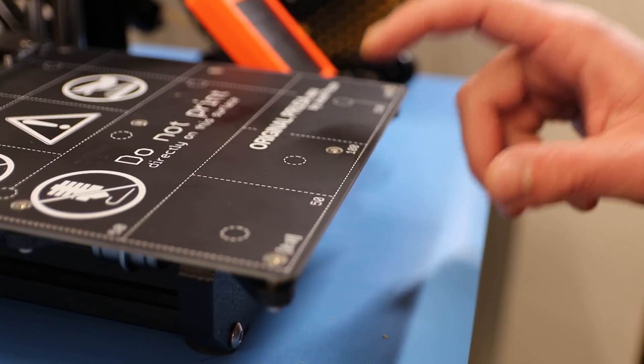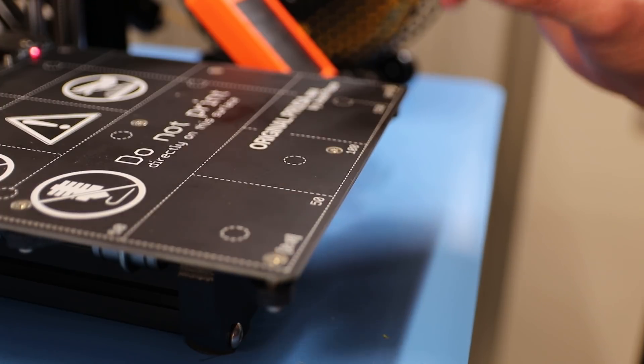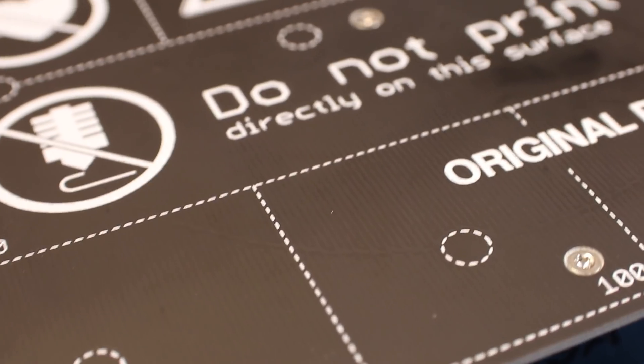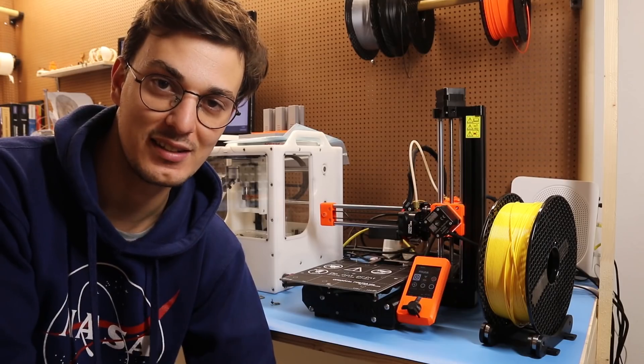FDM 3D printers have a heat bed. These heat beds usually cannot go above 100 degrees Celsius, but if you didn't know they are actually made from a PCB. It has a super long track that acts as a resistor which dissipates heat.